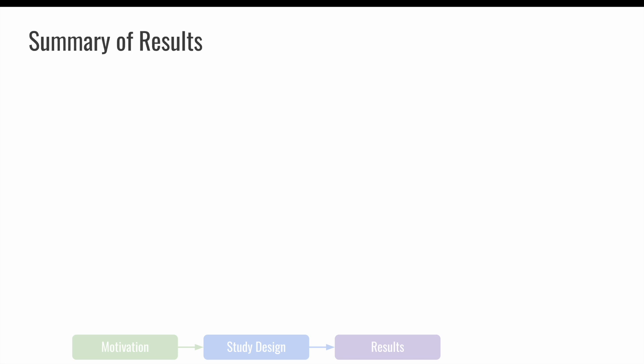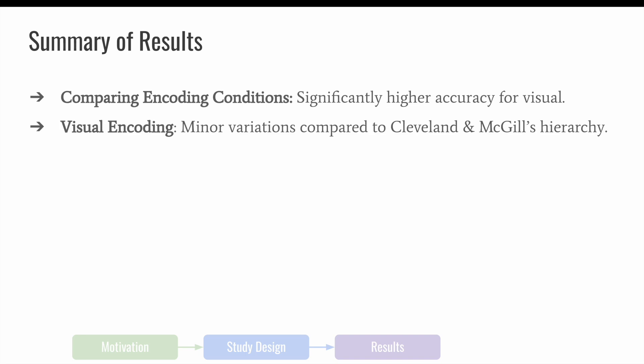To summarize our findings, we found that the encoding condition significantly impacted participants' ability to judge proportional differences accurately. Specifically, visual encoding appeared to be more accurate among participants. We observed some minor differences in the order of accuracy of elementary visual encodings compared to Cleveland and McGill, although it may be due to our relatively small sample size. We found that the order of accuracy for tactile encodings differed from visual, with length emerging as the most accurate tactile encoding.